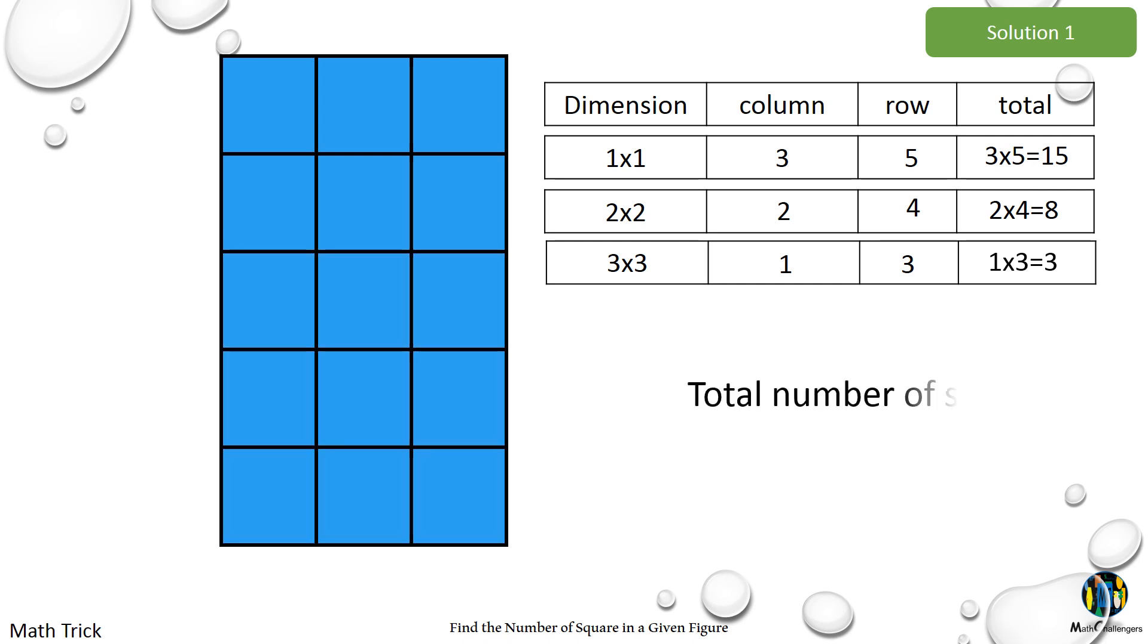To get the total number of squares, we have to add the number of 1 by 1 squares, 2 by 2 squares, and the 3 by 3 squares. 15 plus 8 plus 3 equals 26.